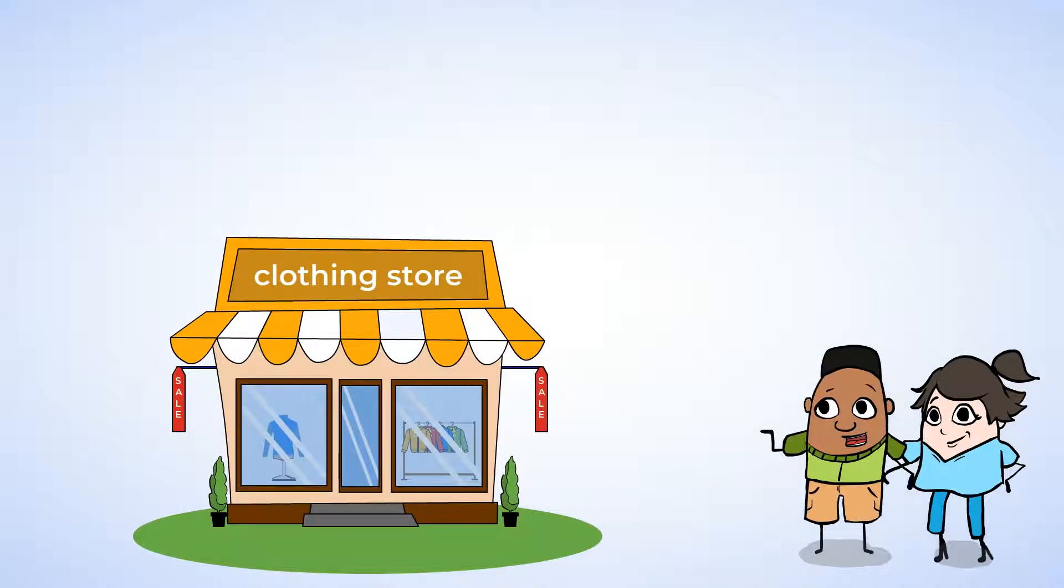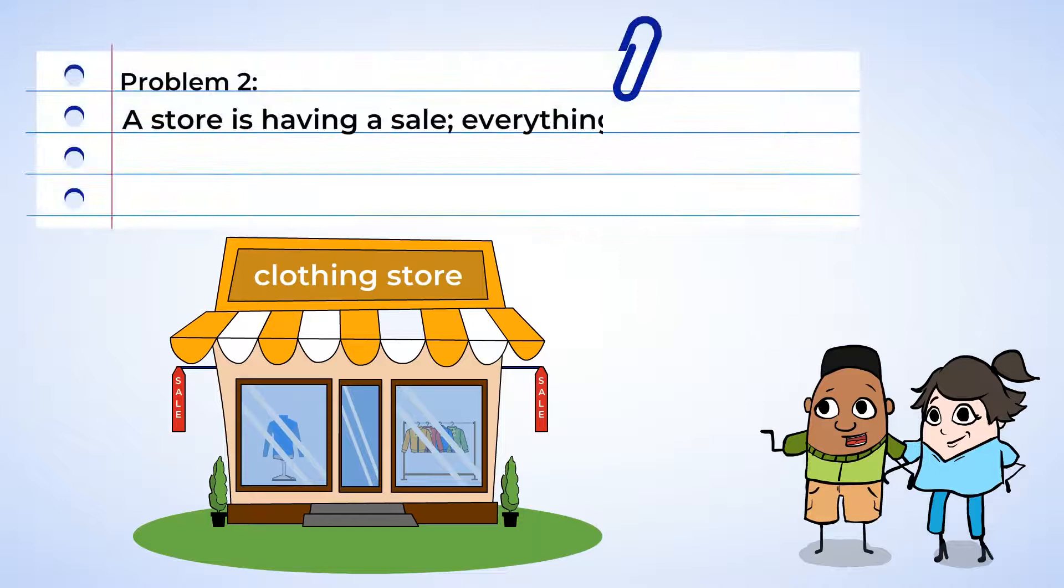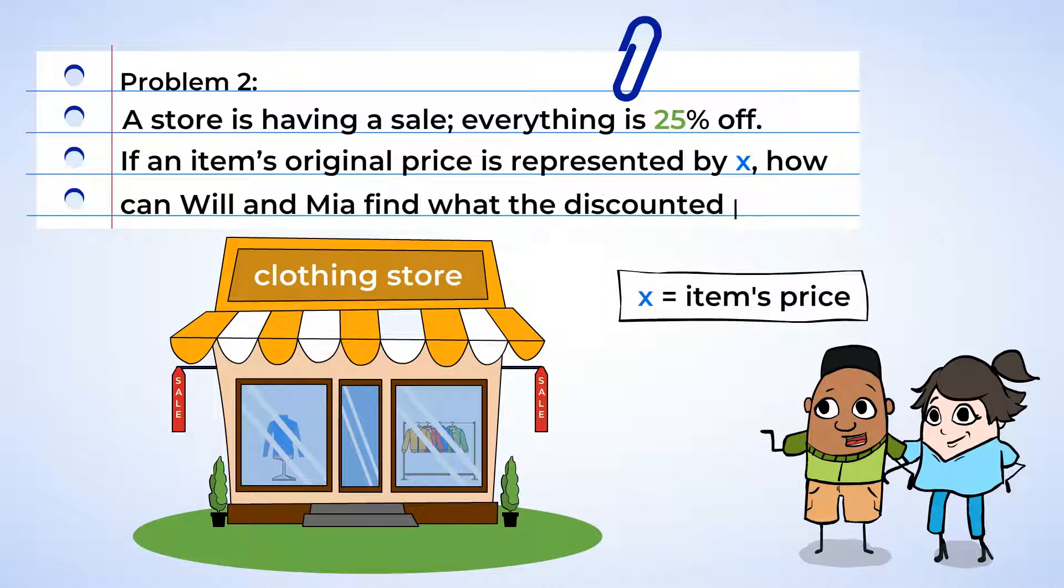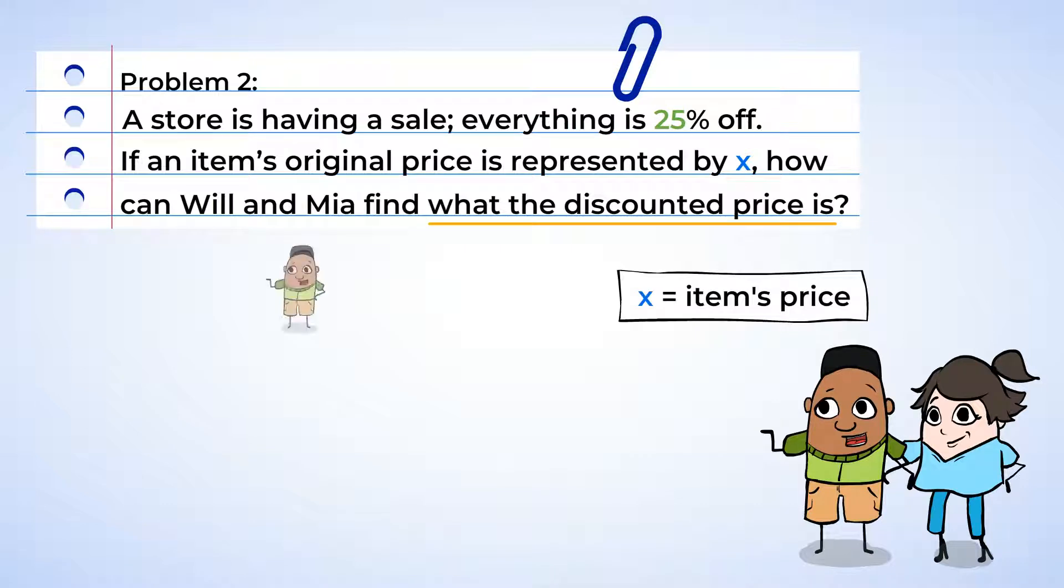Ooh, look who it is, Will and Mia. Their favorite store is having a sale, and everything is 25% off. If an item's original price is represented by X, how can Will and Mia find what the discounted price is? Hmm, Will wants to find 25% off the item, and then subtract that amount from the original price. And so he set up the expression X minus 25 hundredths times X.